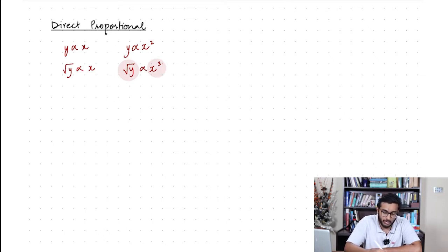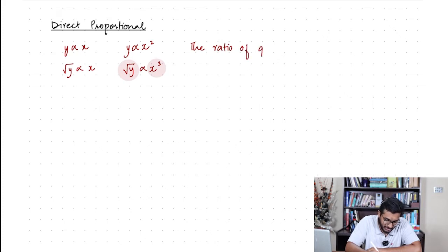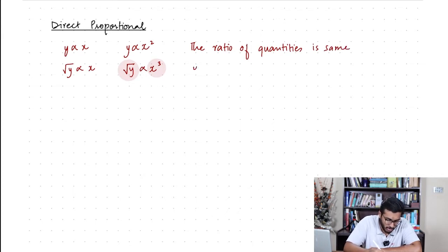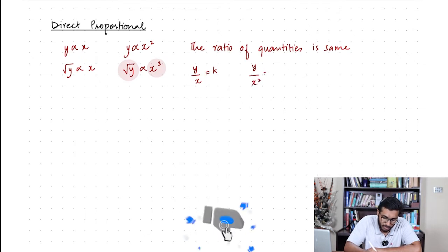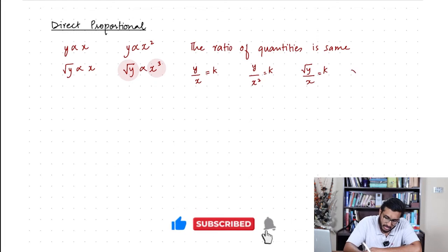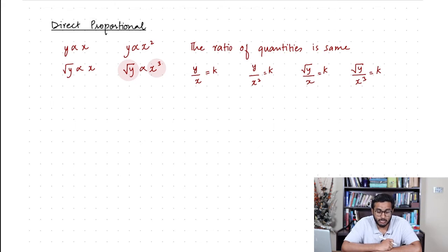In simple terms, whenever we say that two quantities are directly proportional, we mean that the ratio of quantities is always the same. That is, no matter what value you pick, the ratio of y upon x will always be a constant value. Similarly, the value of y upon x squared will always be constant, and the value of √y upon x cubed can always be constant. So you can deal with two quantities being directly proportional by using their ratio.